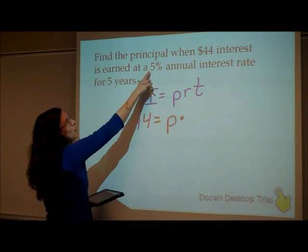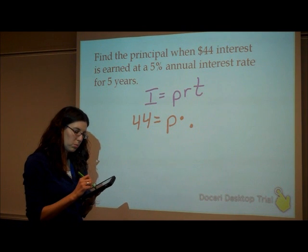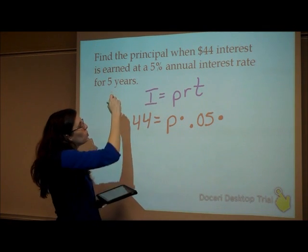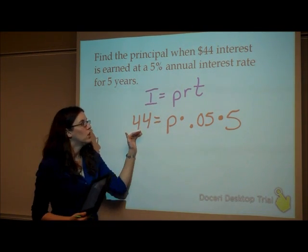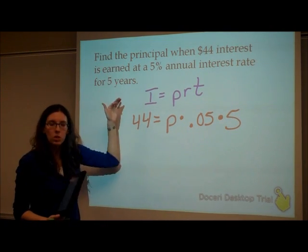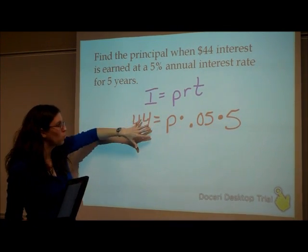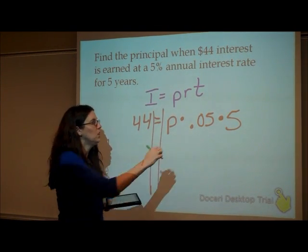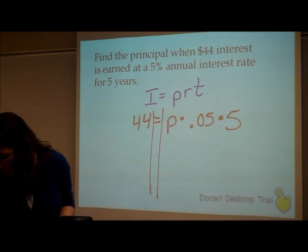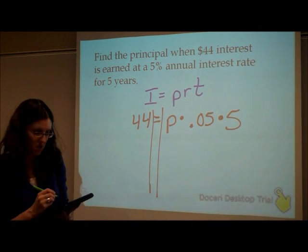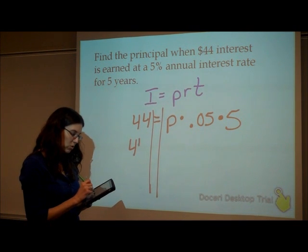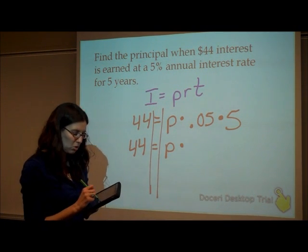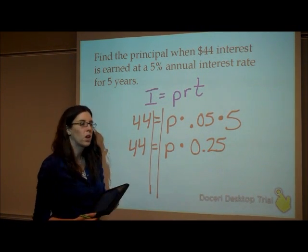So the rate, 5%. So I'm going to put 0.05 times the time, which is 5. So we have down what we know. So we're done with the word problem. So we need to work with this equation. Well, let's simplify it first. These are on one side of the equal sign. So we can go ahead and multiply those numbers. So 0.05 times 5 gives me, and I'm going to rewrite everything. So 44 is equal to P times, that is equal to 0.25.